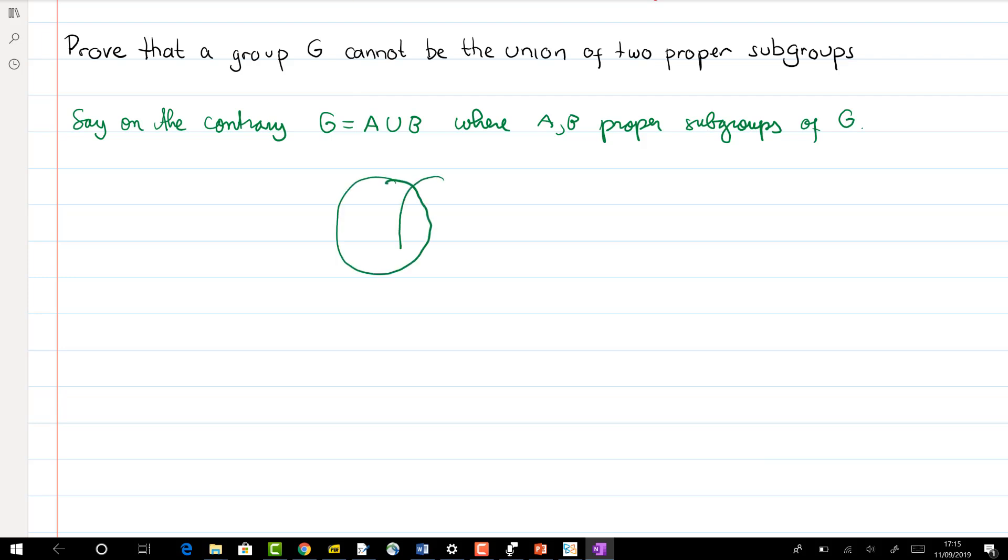Then we have this mental picture in our mind that G is a union of two proper subgroups A and B. And then since A is a proper subgroup or B is a proper subgroup, we can find an element in A which does not belong to B and vice versa, we can find an element in B which does not belong in A.